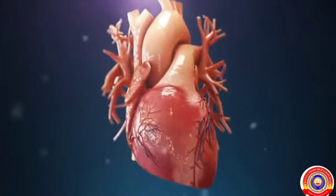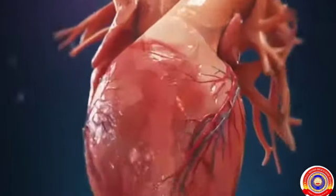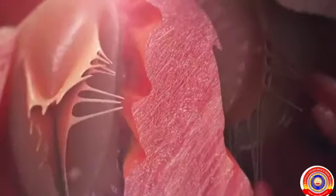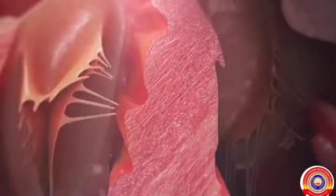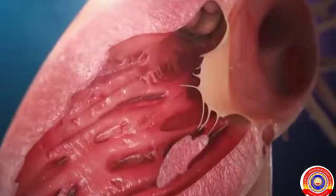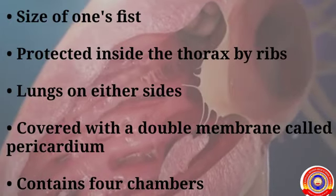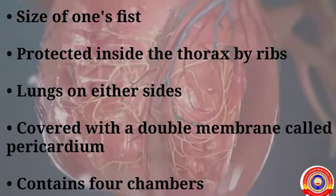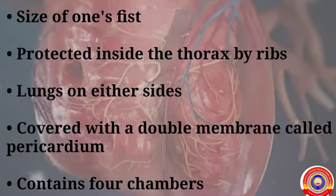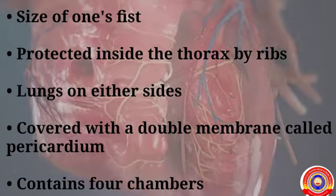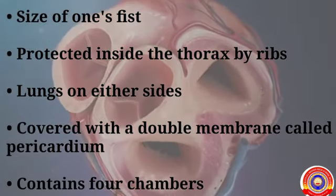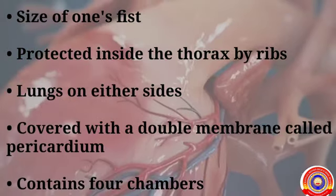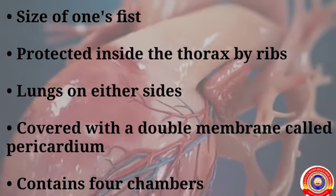The heart is the center of the blood circulatory system. The heart pumps blood to all parts of the body. What are the peculiarities of the human heart? It has the size of one's fist, and it is protected inside the thorax by ribs with lungs on either side. It is covered with a double membrane called pericardium, and the human heart contains four chambers.